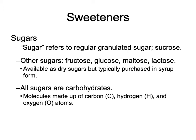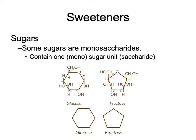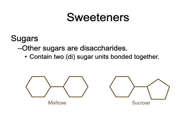All sugars are carbohydrates — made of carbon, hydrogen, and oxygen. Some sugars are monosaccharides, meaning they have a single sugar unit. You can see on the left glucose and on the right fructose — an illustration of what the chemical structure looks like. We can buy pure glucose and pure fructose. We can also buy sugars in the form of a disaccharide, which means two different sugars bonded together — sucrose, our table sugar, is a familiar disaccharide.